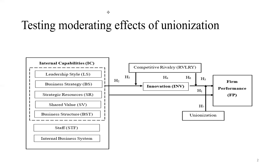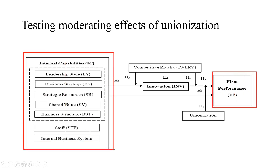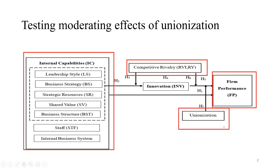Here you can see our dependent variable or the research interest — this is firm performance. These are our standard independent variables, this is our continuous type moderator, this is our categorical type moderator, and this is our mediating variable.